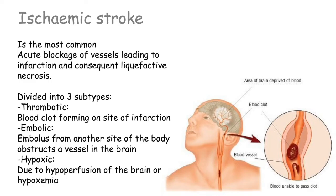Now let's talk about ischemic stroke. This is the most common type of stroke and it is characterized by an acute blockage of vessels leading to infarction and consequent liquefactive necrosis. As shown in this image, there is a blood clot that is not letting blood flow to the brain. If the brain doesn't receive blood, it is not receiving oxygen or nutrients, and so you're going to have cell death.